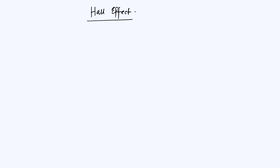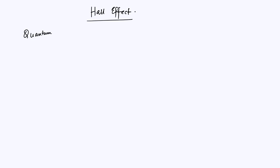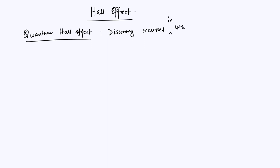Let us talk about the discovery of the Hall effect to begin with, and actually start with the quantum Hall effect — we will come to the classical Hall effect shortly. This is known very precisely: the discovery occurred on the night of the 4th and 5th of February in 1980, at about 2 am in the morning.